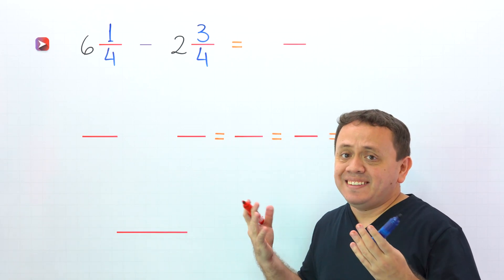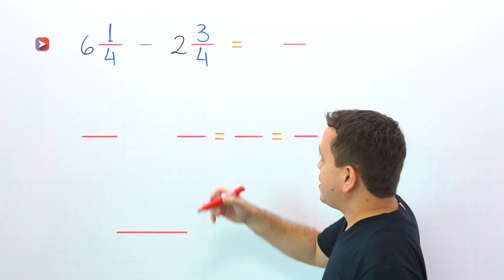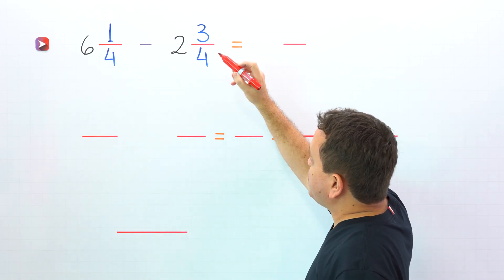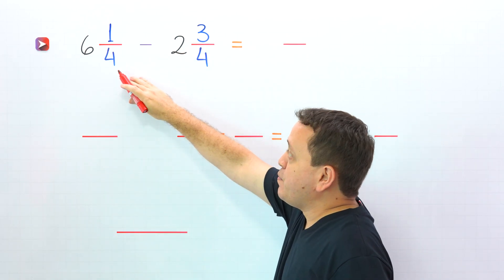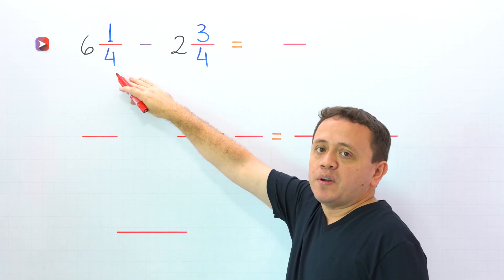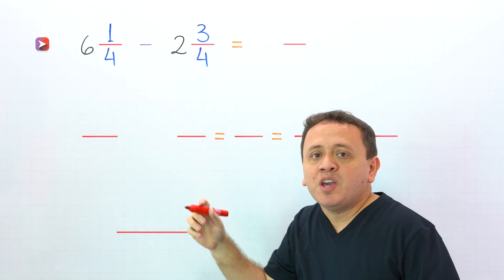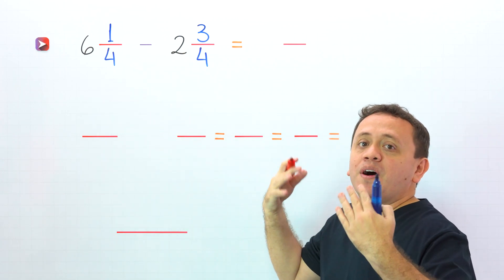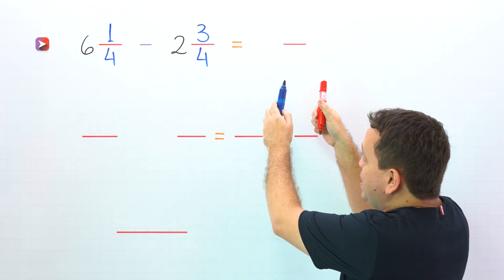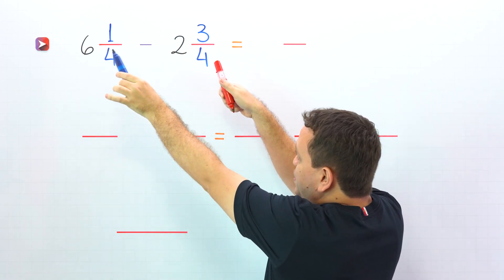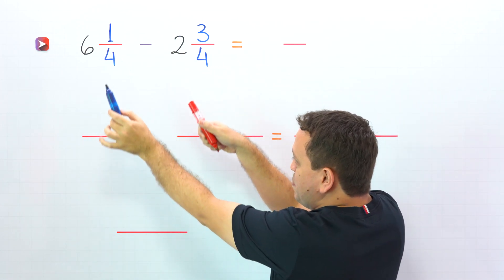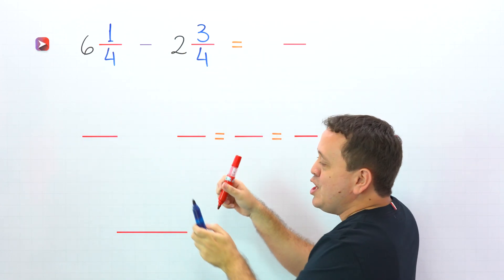In cases like this, where the fractional part of the second mixed number is greater than the fractional part of the first mixed number, we are going to follow a different procedure. To find the difference, we are going to convert these two mixed numbers to improper fractions.